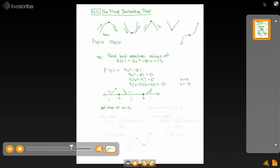Let's check to the right of 3, put in a value like 10, positive times positive, positive, increasing. So if it decreases and then increases there must be a minimum. So local min at x equals 3.